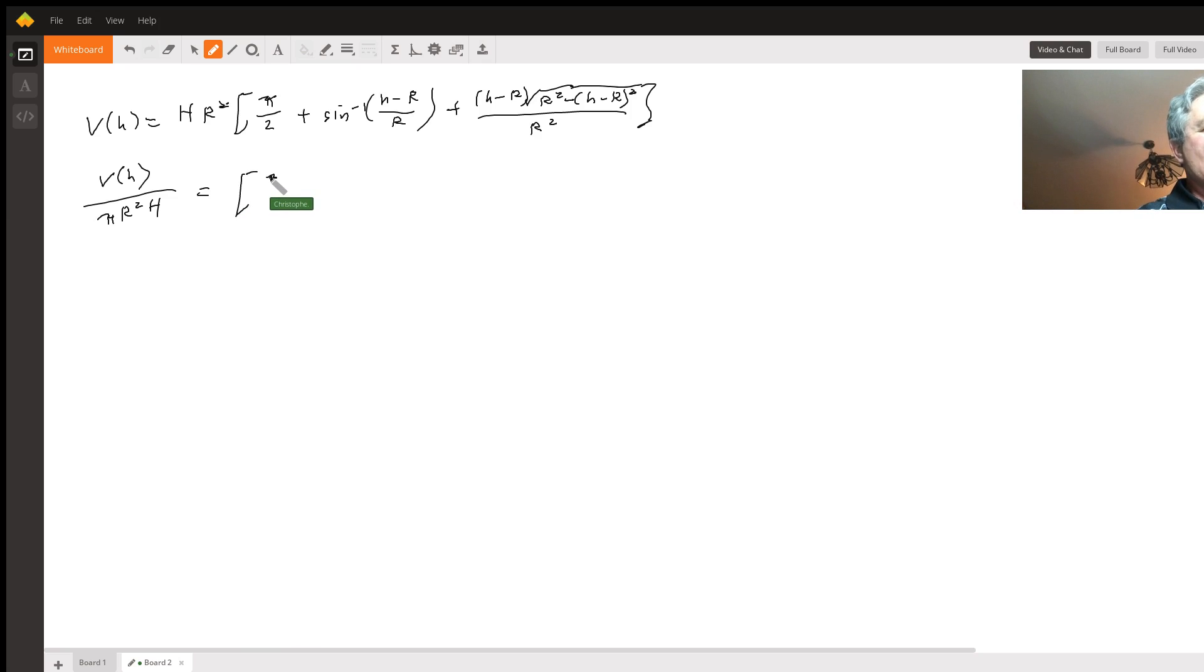The pi's would cancel out, so you just get 1 half plus 1 over pi times the inverse sine, and then plug in your numbers: h minus 5 over 5 plus h minus 5 times the square root of 25 minus h minus 5 quantity squared over 25 pi.